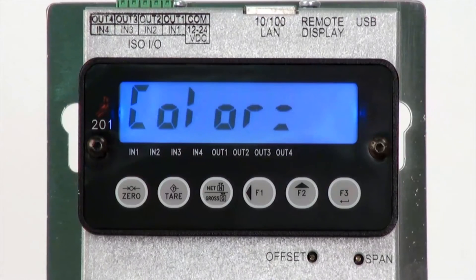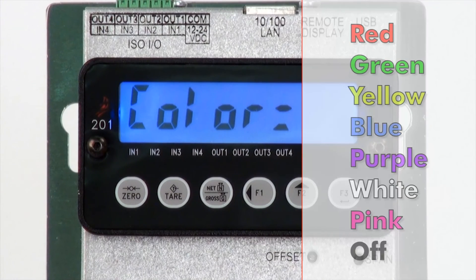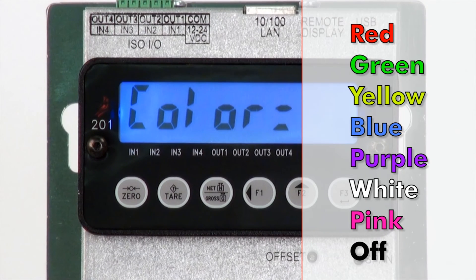The background color may be configured for the default, under, accept, and over settings. The 201 is capable of displaying in red, green, yellow, blue, purple, white, pink, or no color at all.